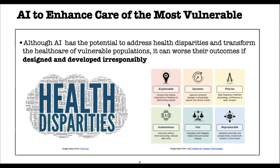It's important to integrate responsible principles when developing AI technologies. Examples of these principles include explainability — meaning whoever is using the AI technology should understand why it is producing a given output — as well as dynamic clinical signal analysis, precision, full automation, fairness (meaning the algorithm must treat all groups fairly), and reproducibility (meaning the algorithm must give the same output whenever run using the same data).